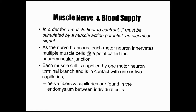Remember, muscles contract — that means they shorten in length — and when they contract, that is what causes your limbs and your body to move. For that to happen, these muscles need to be stimulated by an action potential from a motor neuron. As these motor neurons branch out, each motor neuron is going to innervate multiple muscle cells, and they do this at a point called the neuromuscular junction — where the neurons and the muscle tissue come together.